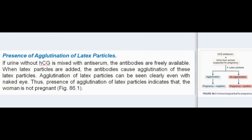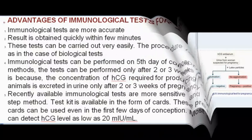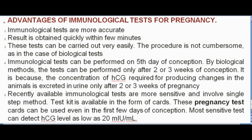Advantages of immunological tests for pregnancy: immunological tests are more accurate; results are obtained quickly within a few minutes; these tests can be carried out very easily without cumbersome procedures. Immunological tests can be performed on the fifth day of conception, whereas biological tests can only be performed after two or three weeks, because the concentration of HCG required to produce changes in animals is excreted in urine only after two or three weeks of pregnancy.